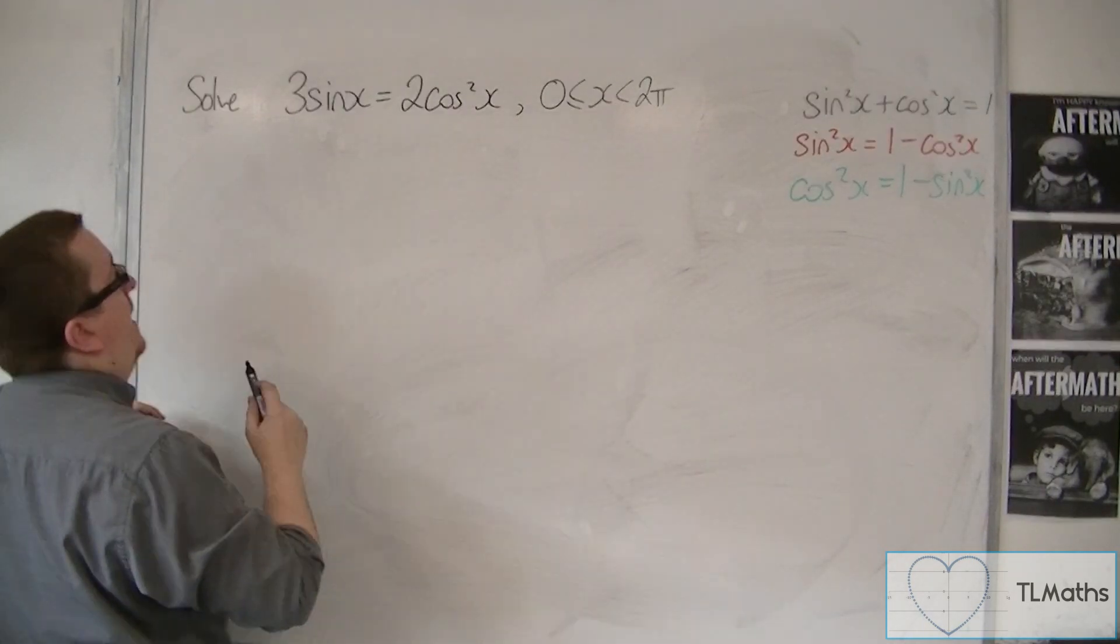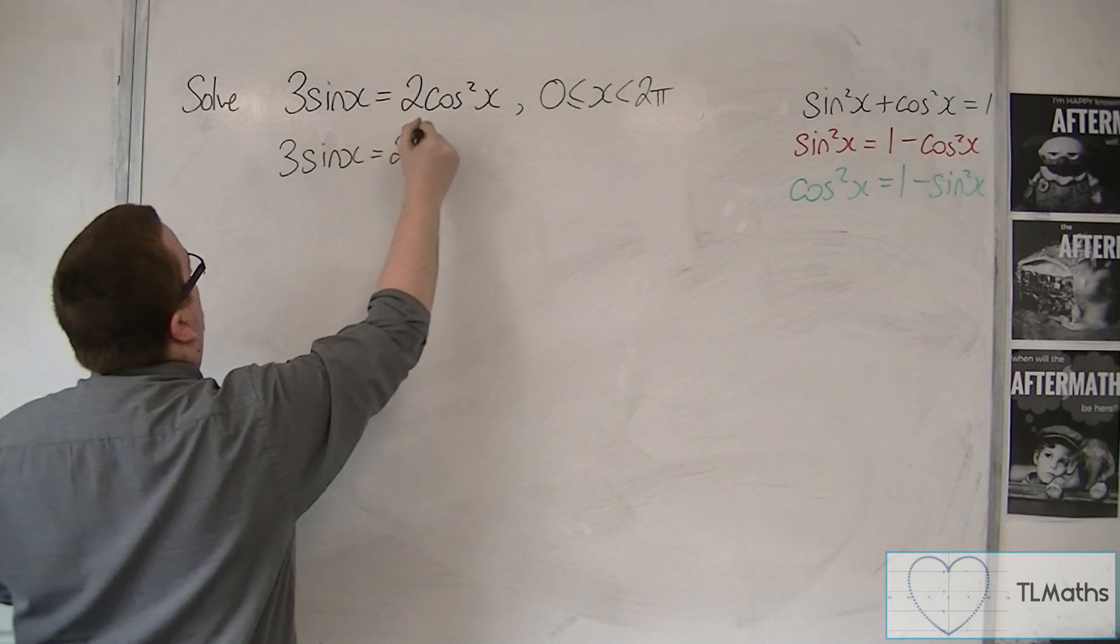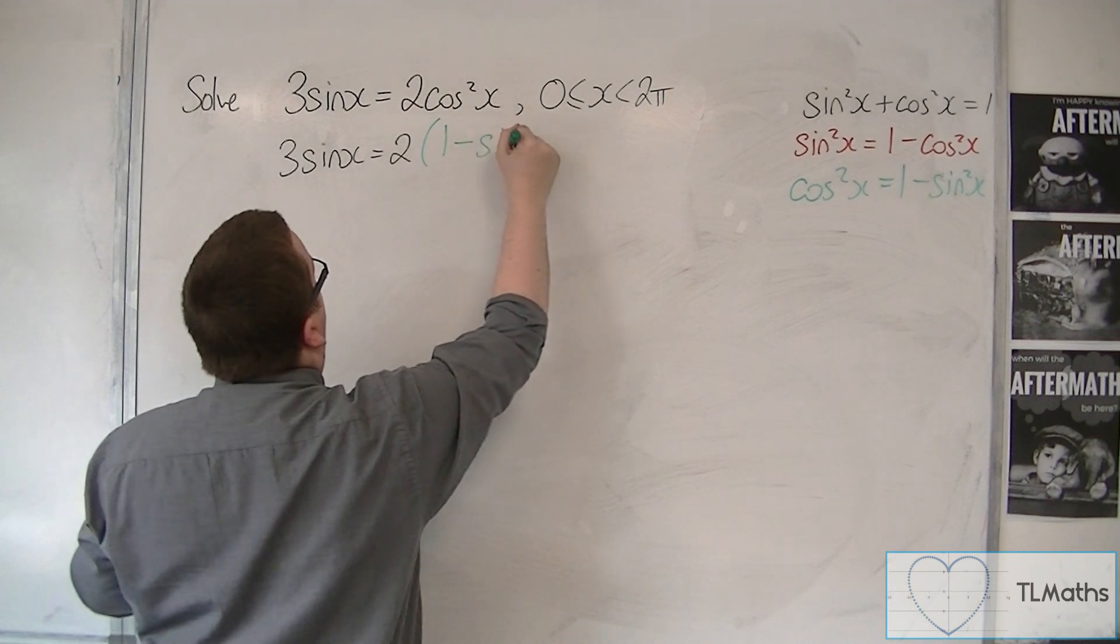So what I have is 3 sine x is equal to 2 lots of my replacement for cos squared, which is 1 minus sine squared.